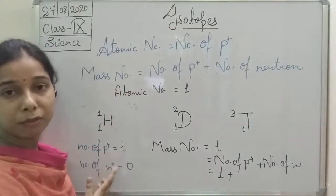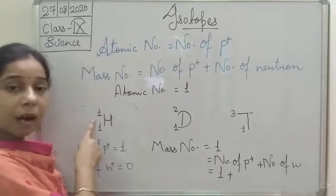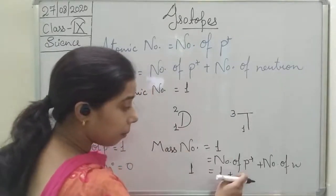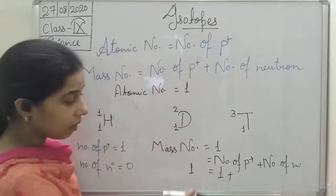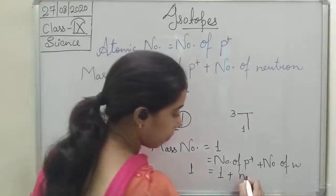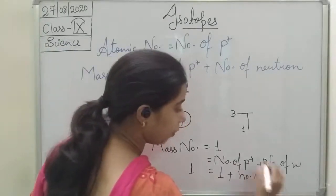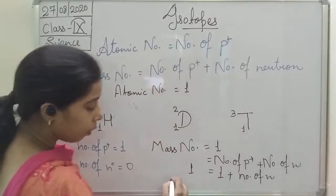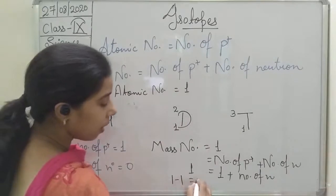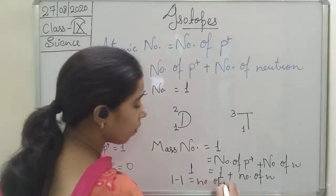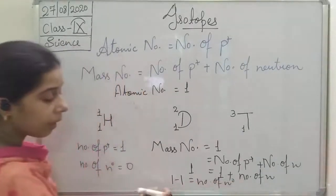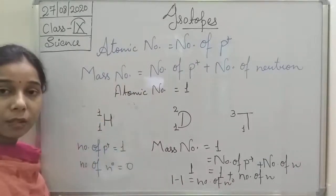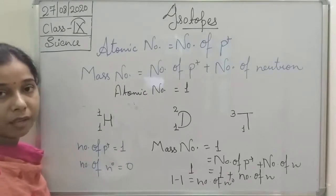By this formula we can find the number of neutrons. Mass number is 1, atomic number which is number of protons is 1. Number of neutrons equals mass number minus atomic number: 1 minus 1 equals 0. So the number of neutrons in hydrogen is 0.